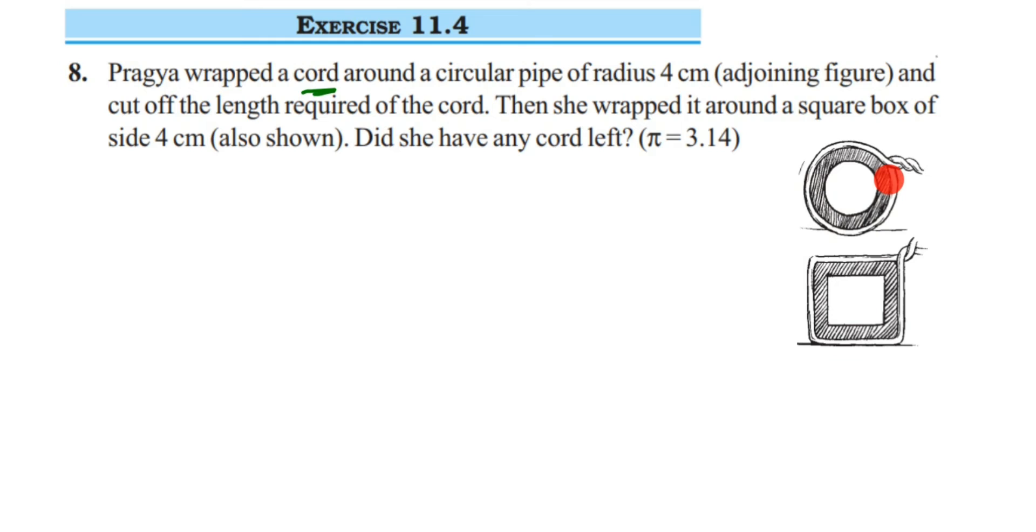So the same cord she used for the circular pipe, she removed it and used it for the square box here. They're asking if the cord is left or not - is there any extra cord left after wrapping it around the square box? Now, since we're talking about wrapping, this means you have to find out the circumference first.